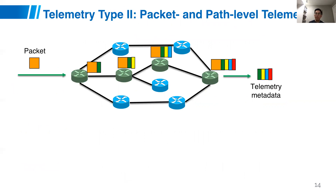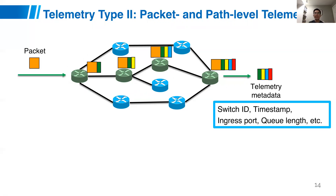The second telemetry type covered is packet and path-level telemetry. For every packet traversing the network through a list of devices on its path, they need to collect information about each device and the packet — collecting data from the first, second, third, and fourth devices, and finally gathering telemetry metadata. This metadata can include switch ID, timestamps, ingress/egress ports, and queue lengths or occupancy, etc. With this metadata we can answer certain packet-level or path-level queries like latency, round-trip time, and loss paths.